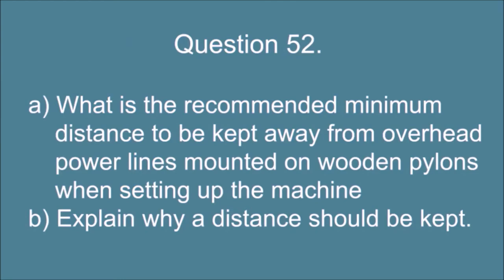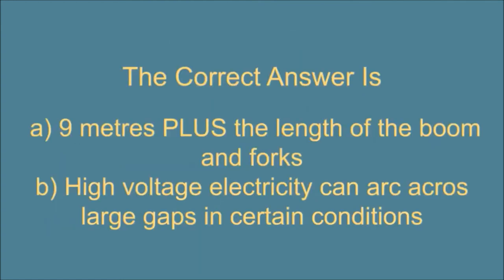Question 52. A. What is the recommended minimum distance to be kept away from overhead power lines mounted on wooden pylons when setting up the machine? And B. Explain why a distance should be kept? The correct answer is: A. 9 meters plus the length of the boom and forks. And B. High voltage electricity can arc across large gaps in certain conditions.